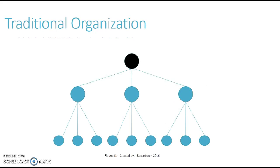As you can see here, represented by the black dot, traditional organizations' goals and decisions are usually given out from the CEO down to the line managers and eventually down to the employees. You can see it's very top to bottom, with all decisions coming from the top and being disseminated down to the employees.